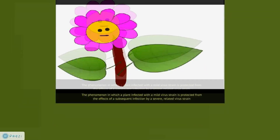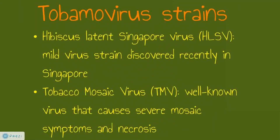Two tumor viruses were used in our experiments. Hibiscus Luton-Singapore virus, or HRSV, was used as the mild virus strain, while Tobacco mosaic virus, or TMV, was used as the severe virus strain. HRSV is a new virus recently discovered, and TMV is a well-known plant virus that causes severe mosaic symptoms and necrosis.